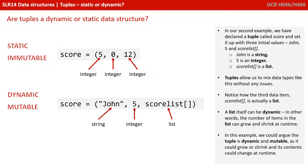In this second example, we've declared a tuple called score and set it up with three initial values: John, 5, and scorelist. John is a string, 5 is an integer, and scorelist is a list. Tuples allow us to mix data types without any issue. Notice how the third data item, scorelist, is itself actually a list — and a list of course can be dynamic. In other words, the number of items in the list can grow and shrink at runtime. So in this example, we could argue the tuple is dynamic and immutable as it could grow or shrink and its contents could change at runtime.